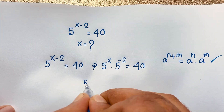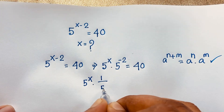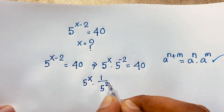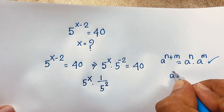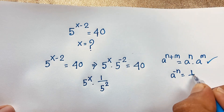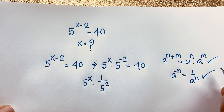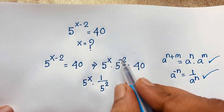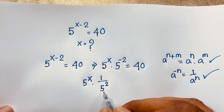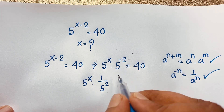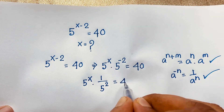Now, 5 to the power x times 1 over 5 to the power 2. According to exponential law, a to the power negative n, it will be 1 over a to the power n. According to this law, 5 to the power negative 2 it will be 1 over 5 to the power 2. This is 5 to the power x times 1 over 25 is equal to 40.